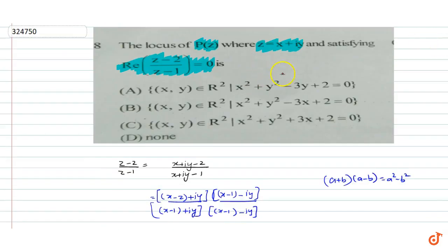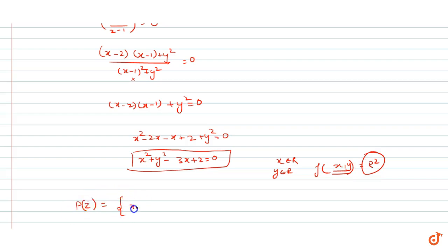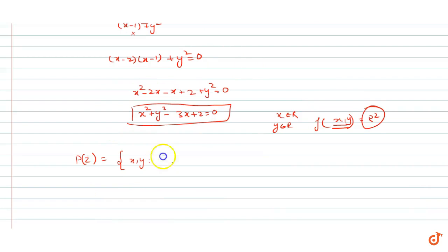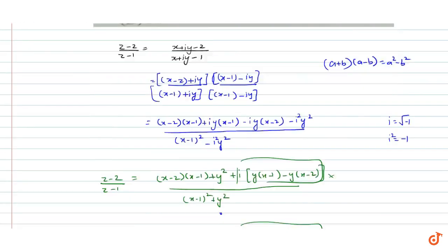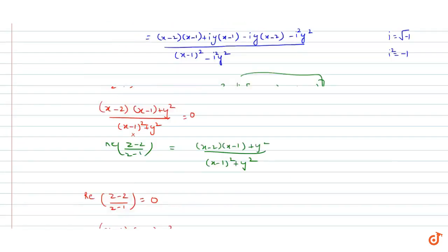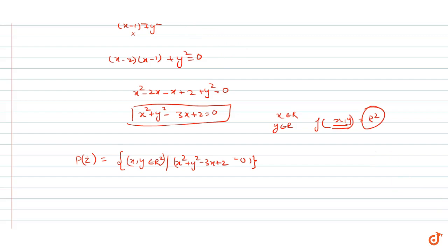Now we write this in set-builder form. Since x and y both belong to the real plane, the locus of z, i.e., P(z), is the set {(x, y) ∈ ℝ² | x² + y² - 3x + 2 = 0}. This is our answer.